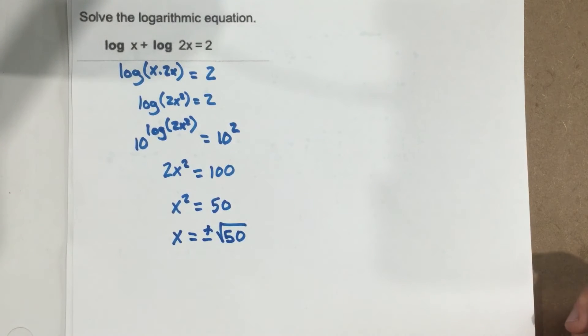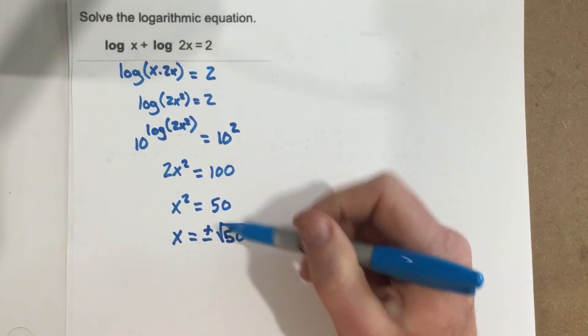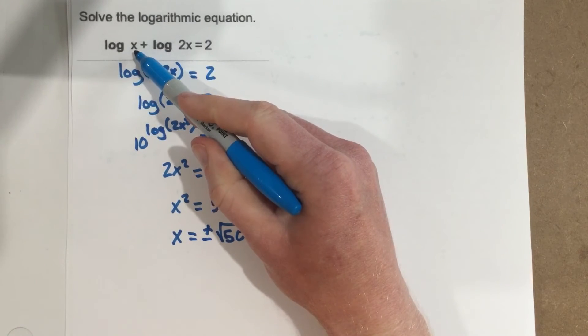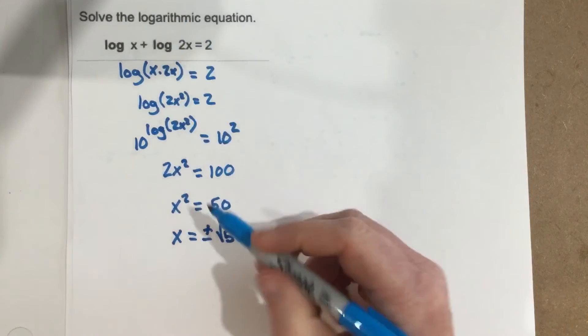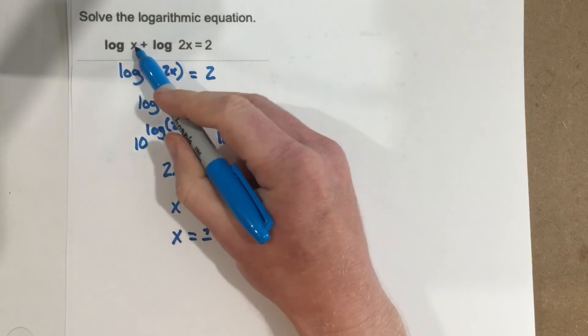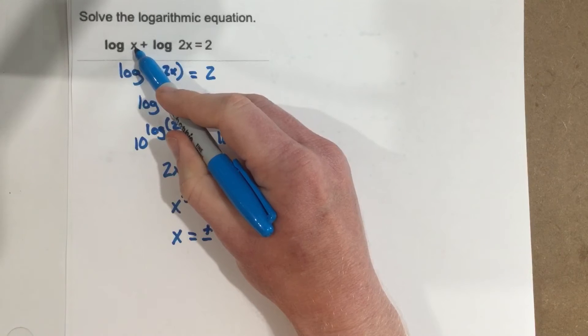Now we have to double check that both plus root 50 and minus root 50 work. Well, if I take root 50 and I plug it into x, positive root 50, that's going to work out just fine. We're not going to have any problems there. But if I take negative root 50 and plug it in here, I can't take the logarithm of a negative.